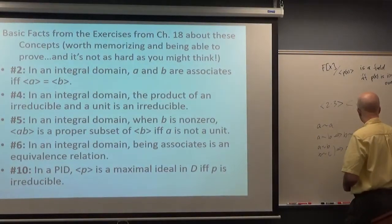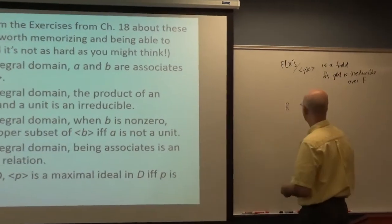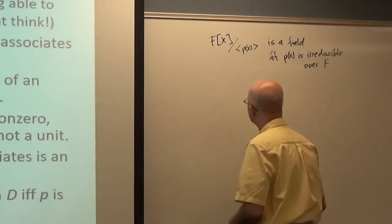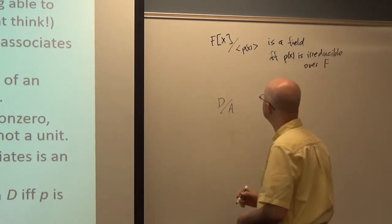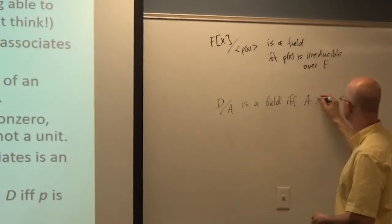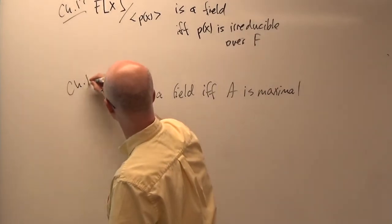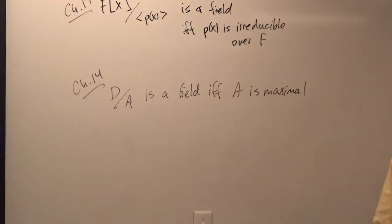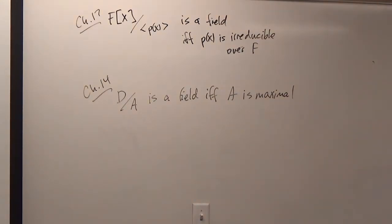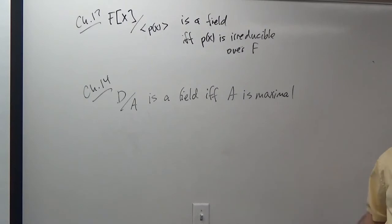Back in chapter 14, we knew that an integral domain D modulo an ideal A is a field if and only if A is maximal. This was chapter 17, but a similar idea appeared in chapter 14. When I say A is maximal, I mean A is a maximal ideal. We'll go over that definition again and what it means.